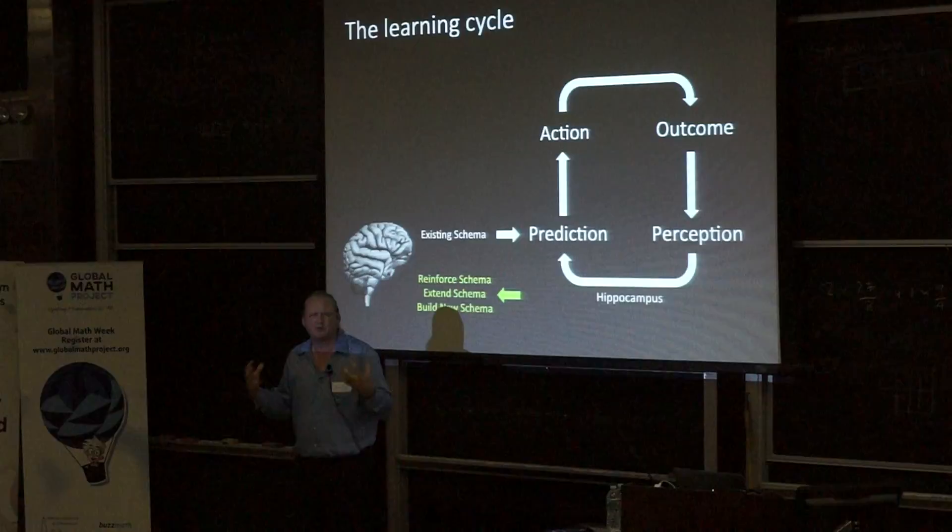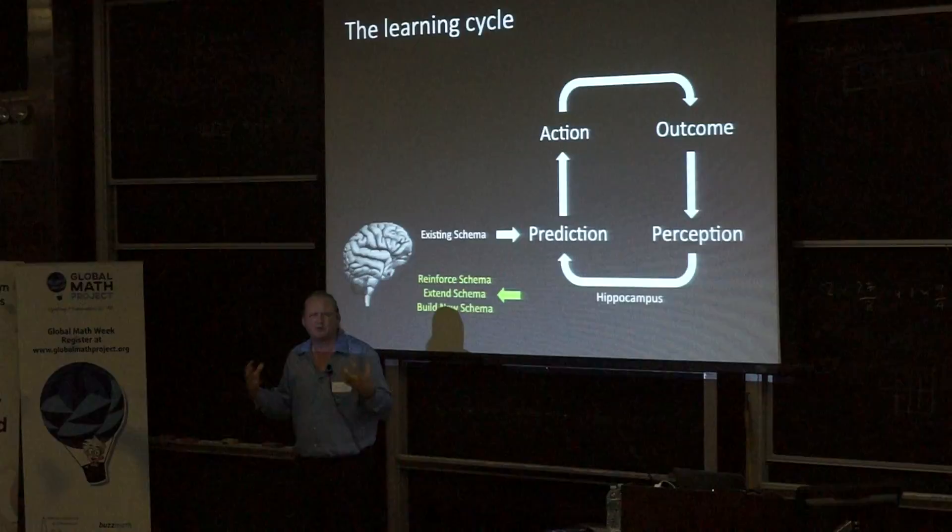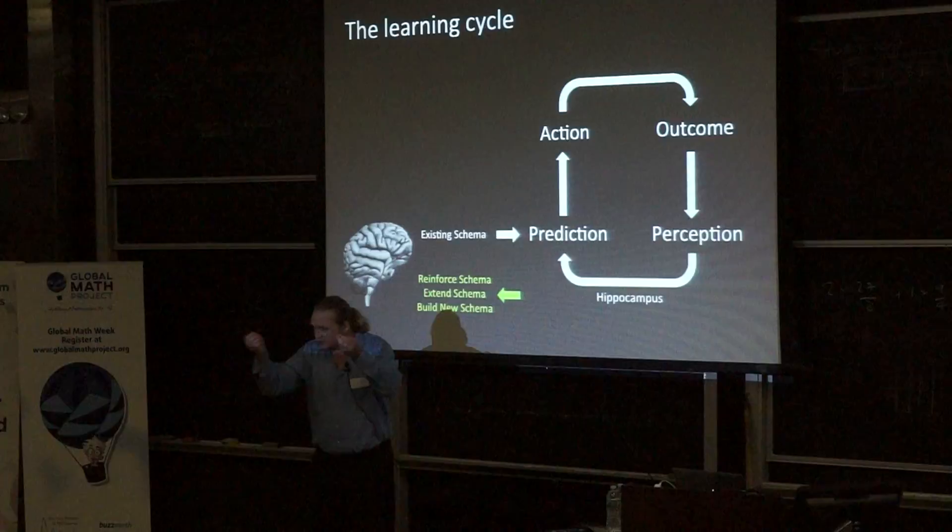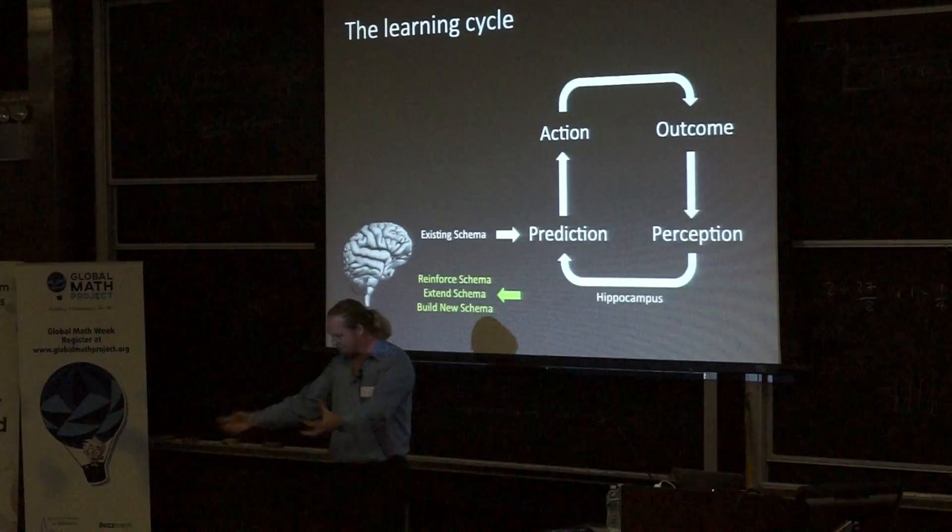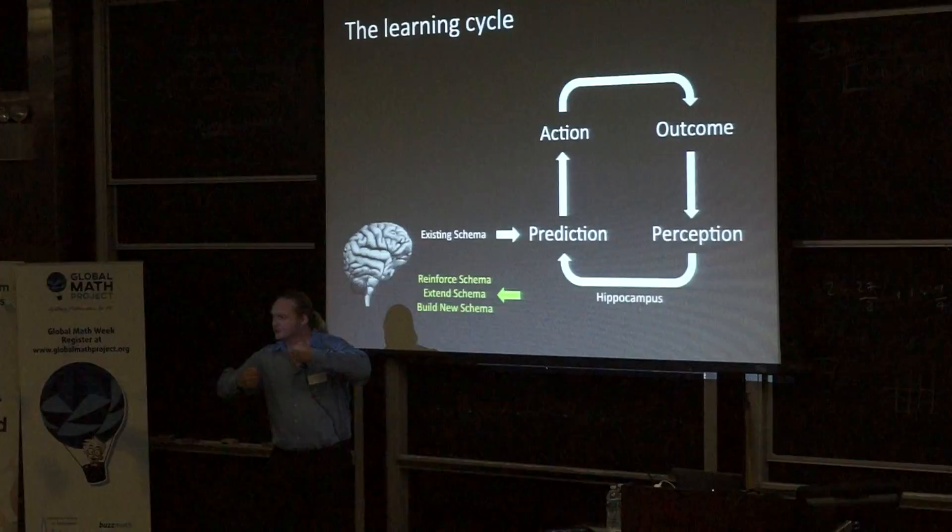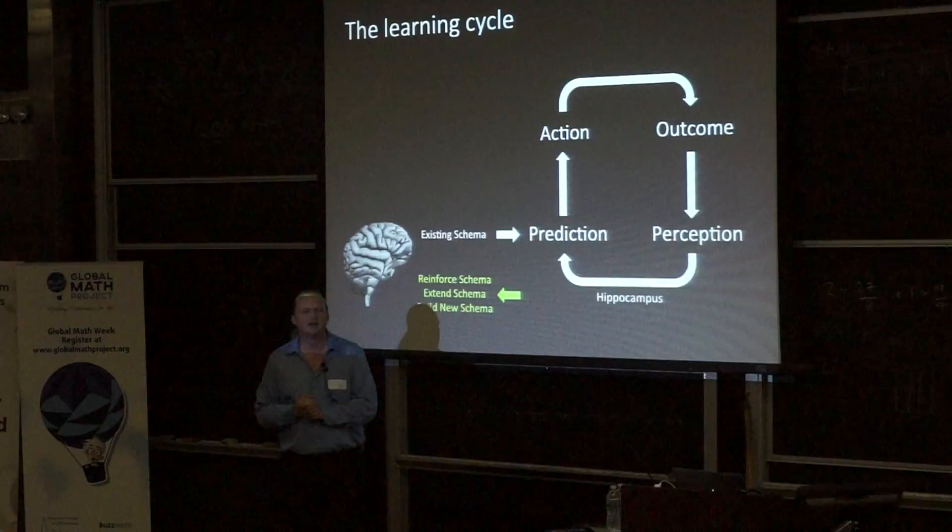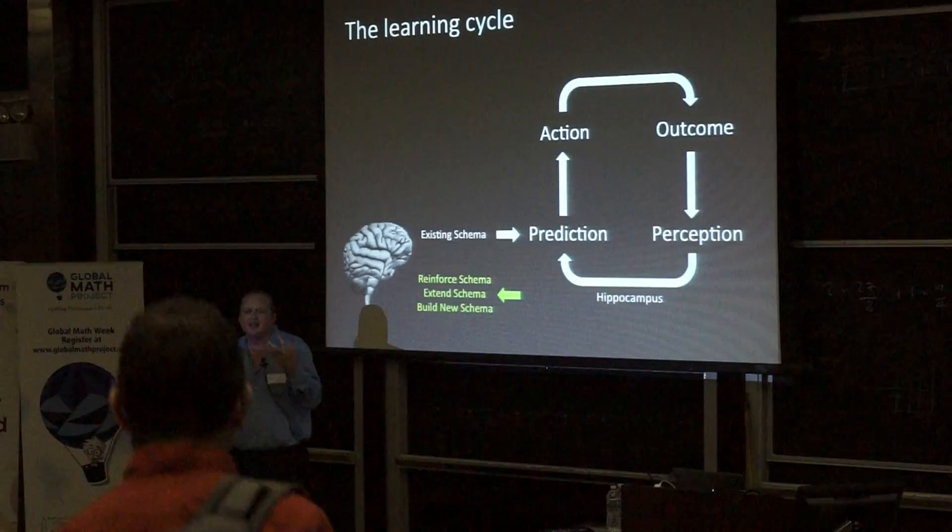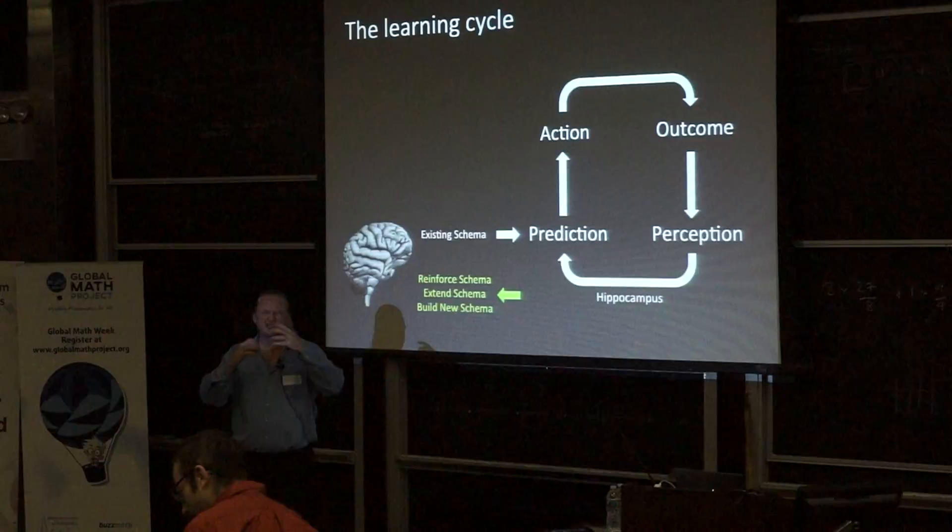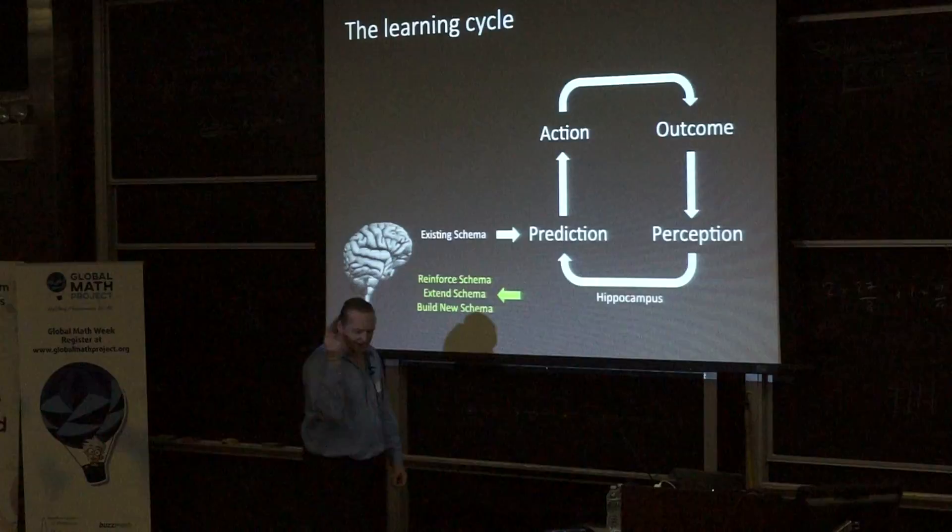They need to be engaged in the process, and they need to predict what is actually happening. They make a prediction, they take some action based upon that prediction, they see the outcome, and they perceive with their senses. And then in your hippocampus, inside your brain, your prediction and the perception of what happens match and hit each other. What do you think happens when your perception matches your prediction? Literally the neural network that caused that prediction to happen is strengthened. But more interestingly, what do you think happens when your prediction and perception do not match? At that point you literally say, okay, I need to either build new schema or extend my thinking. This is the learning cycle. This is the fundamental way of engaging with learning.